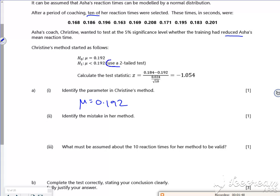Identify the mistake. She said it's a two-tail, but it isn't. It's a one-tail. So it's a one-tail.